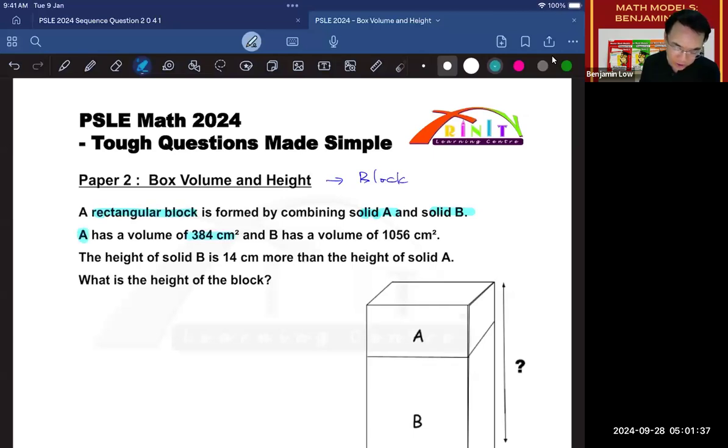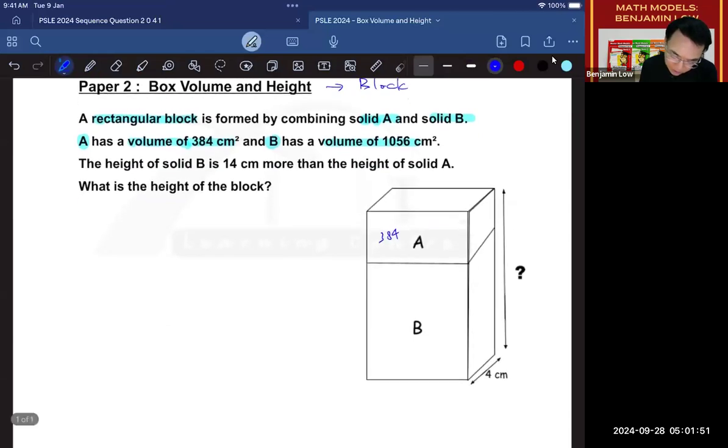It says that A has a volume of 384, B has a volume of 1056. These are their volumes. Maybe what we can do is write here 384 and then we can write here 1056, cubic centimeters.